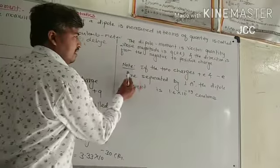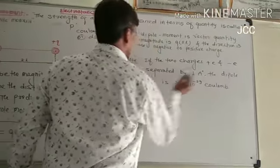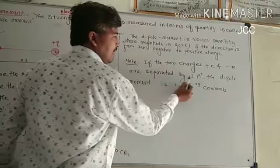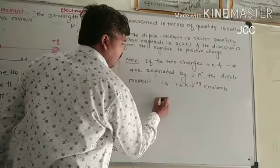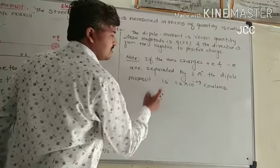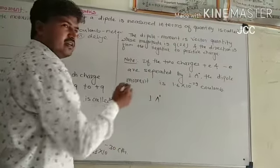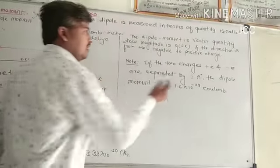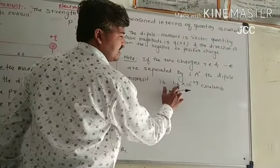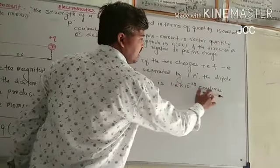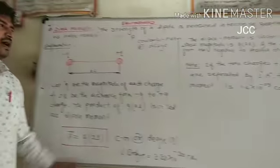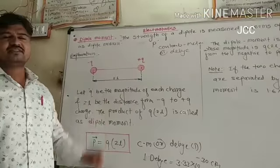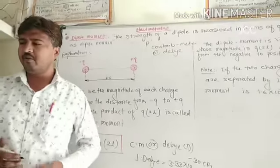Note that if the two charges minus E and plus E are separated by one angstrom unit, angstrom is a unit of distance measurement. The dipole moment is 1.6 into 10 raised to minus 29 Coulomb. This is the explanation of dipole moment.